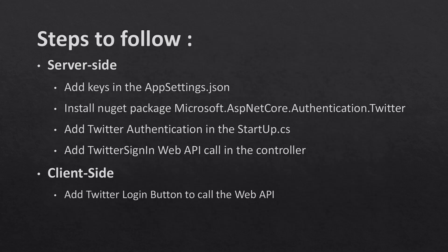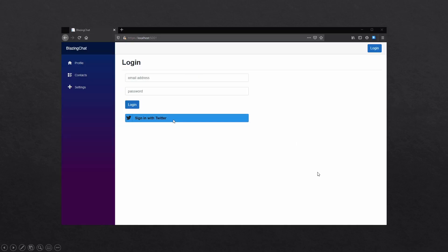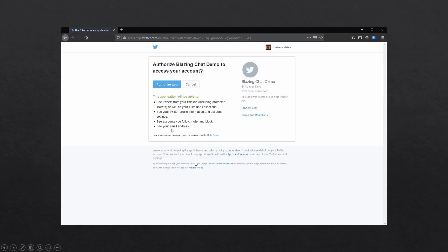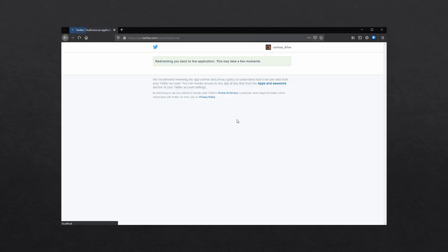For that I'm going to follow these steps: first I'm going to add those keys in appsettings.json on the server side, then install the Microsoft ASP.NET Core Authentication Twitter package on the server side, then add authentication support in the Startup class, then write a Web API call named Twitter Sign In in the controller, and then call this Web API from the client side by adding a Twitter login button.